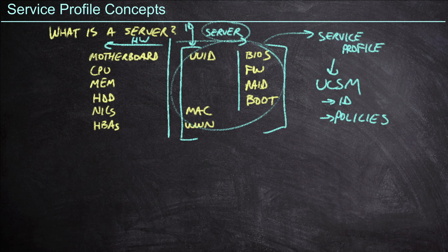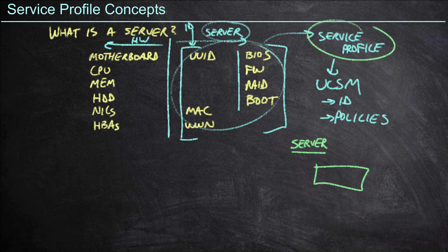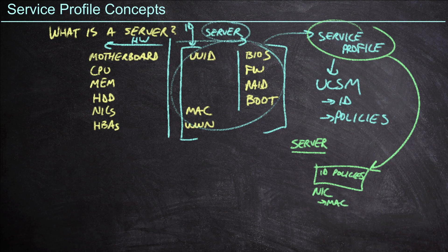Essentially what we have in the UCS world is we're going to spin up a physical set of hardware — we'll call that a physical server. This server, even though it's online and functional, really can't do anything inside of UCS until it receives a service profile. We place a service profile onto this server, and at that point this server assumes all of the identity points and all of the policies that we have defined. This is very important because if we have a NIC inside of this server with its own MAC address, we've effectively stamped a service profile down on top of it, providing it with a MAC address.